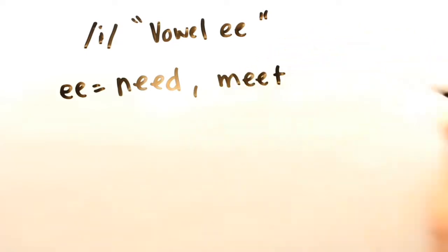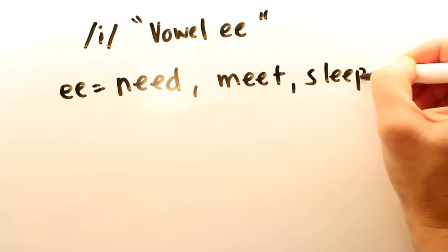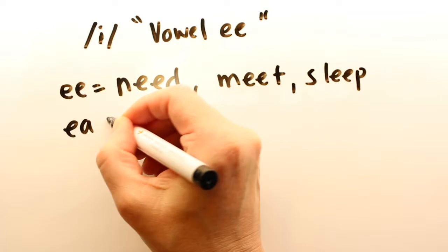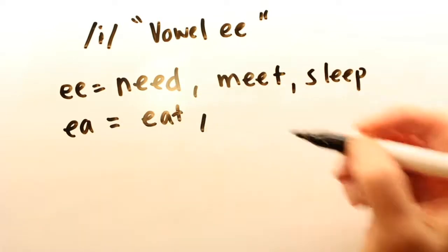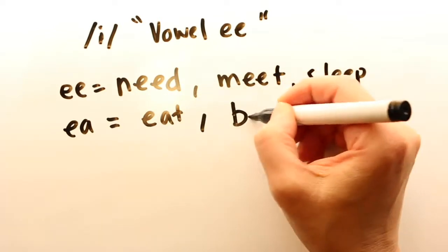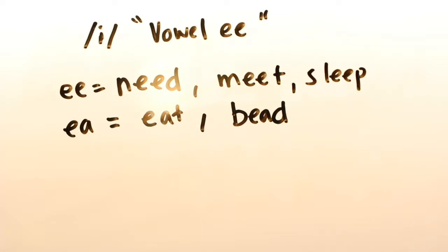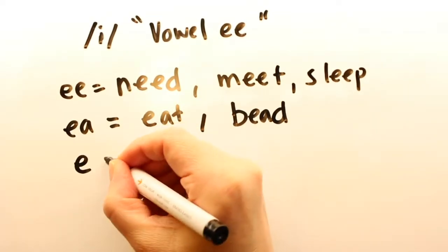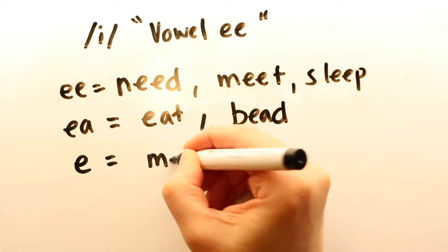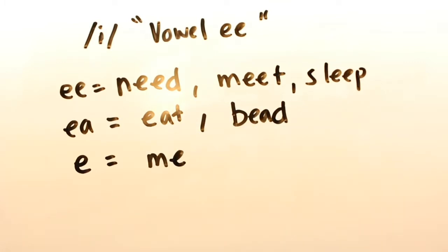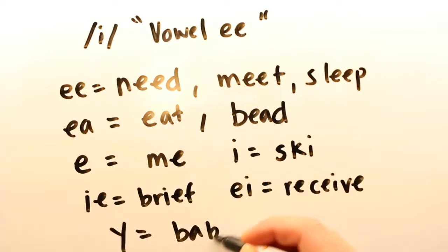In American English, vowel E can be spelled with a number of different letters. Typically, we spell it with two E's, as in the word need, but we can also spell it with E-A, as in the words eat or bead, or simply letter E, as in the word me. Less common spellings would be letter I, I-E, E-I, or Y.